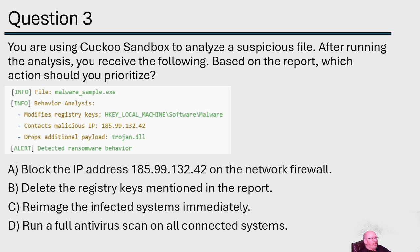Question number three: you're using a CACO sandbox to analyze a suspicious file. After running the analysis, you receive a report showing malware behavior including modified registry keys, a malicious IP address, a dropped additional payload — trojan.dll — and detected ransomware behavior. Which action should you prioritize?